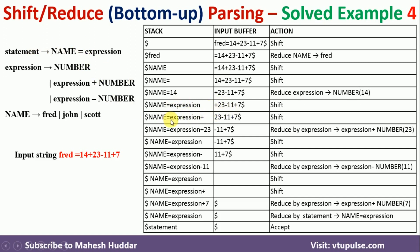With name equals expression plus on the stack and no rule to apply, we shift the next token: 23. This 23 is a number, so expression plus number can be reduced to expression using the rule expression → expression plus number. That reduction is performed.